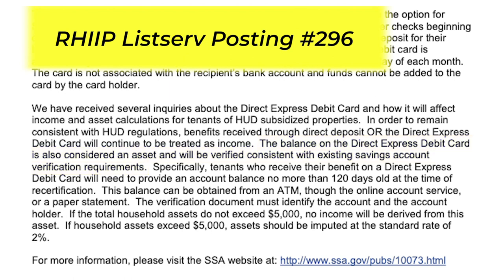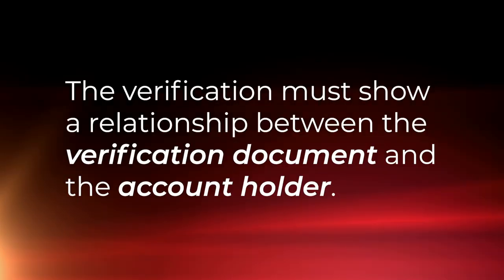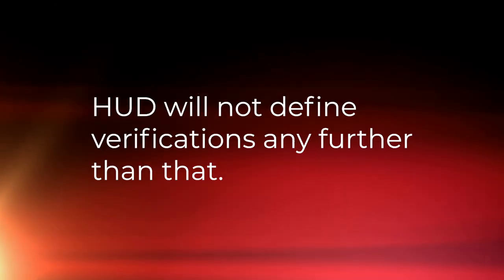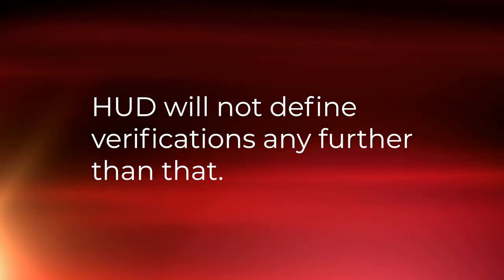Management can use the current balance that the tenant obtains from an ATM or through an online account service or a paper statement that they get from the bank. The verification document must identify the account and the account holder. In a May 2nd, 2013 email from Michael Sharkley in HUD's policy clarifications, he clarified that the verification must show a relationship between the verification document and the account holder, and that HUD would not define verifications any further than that.